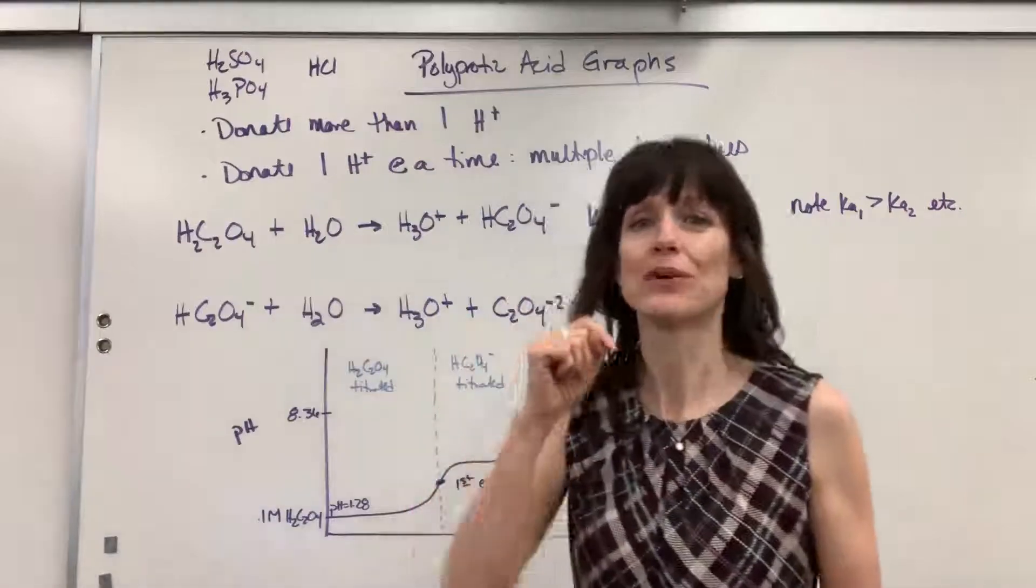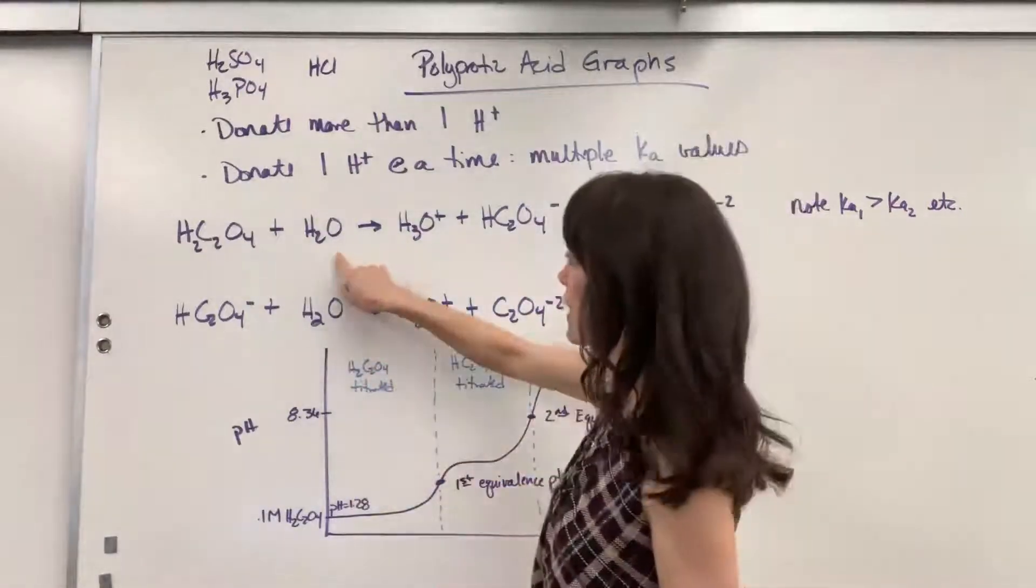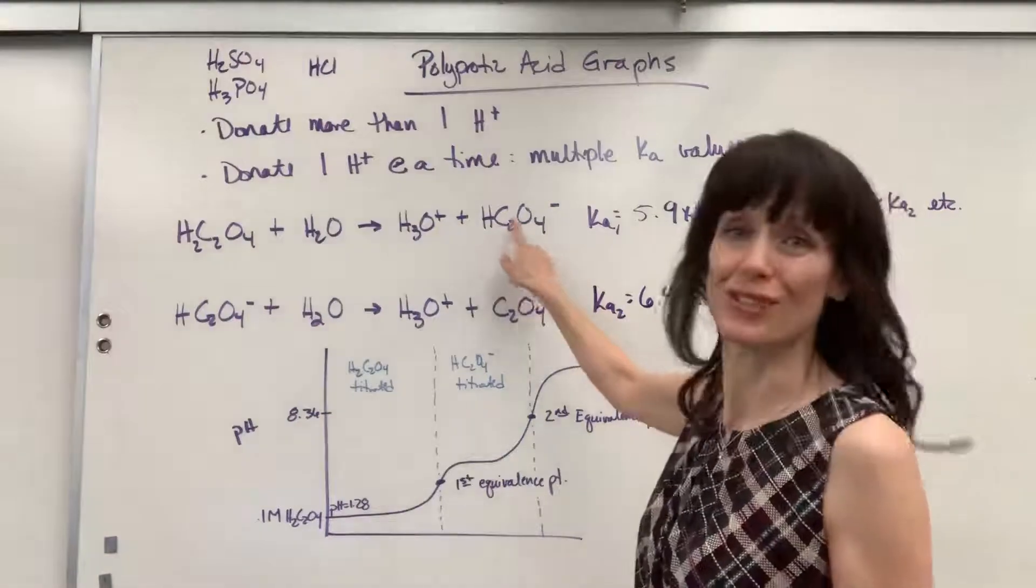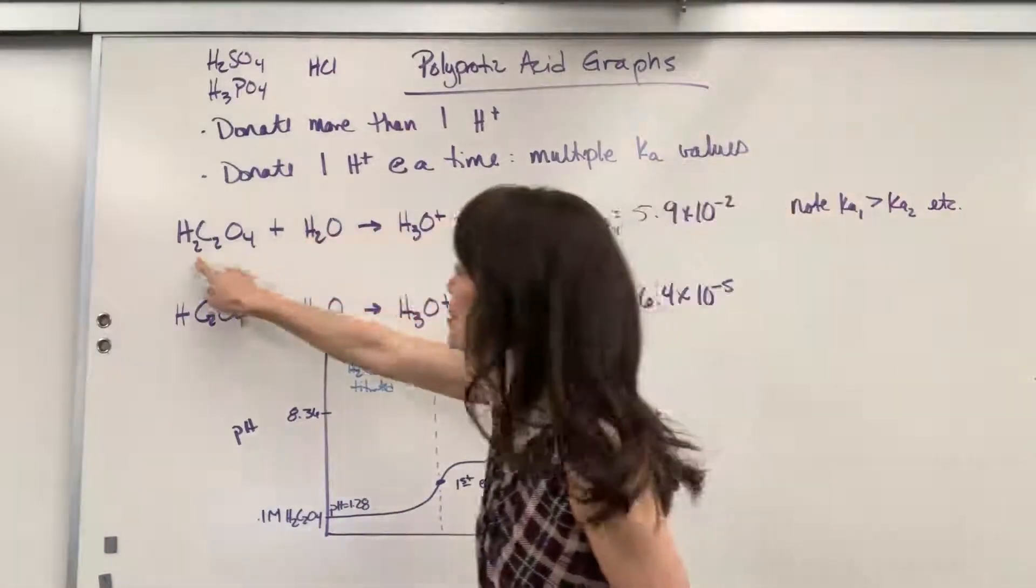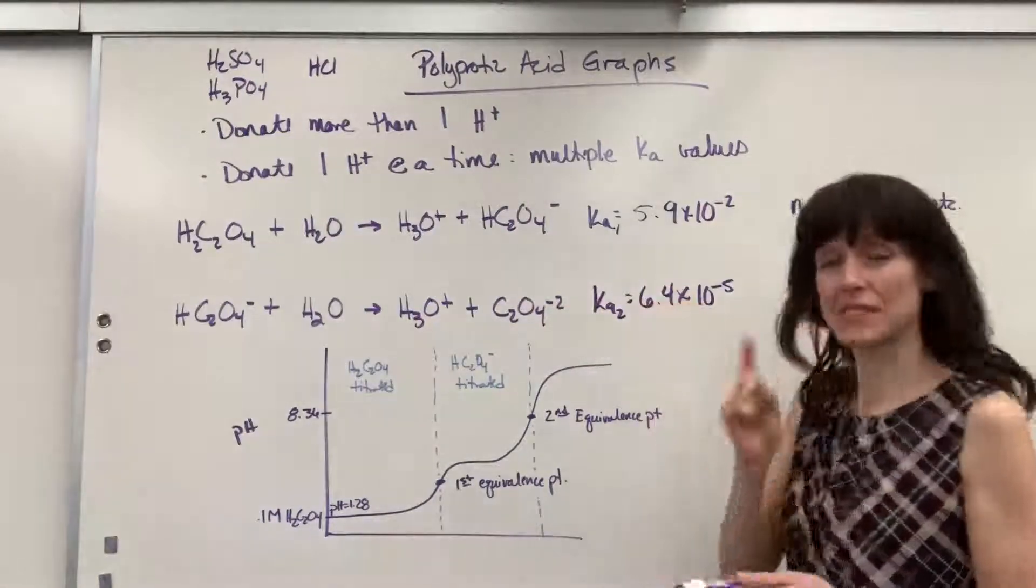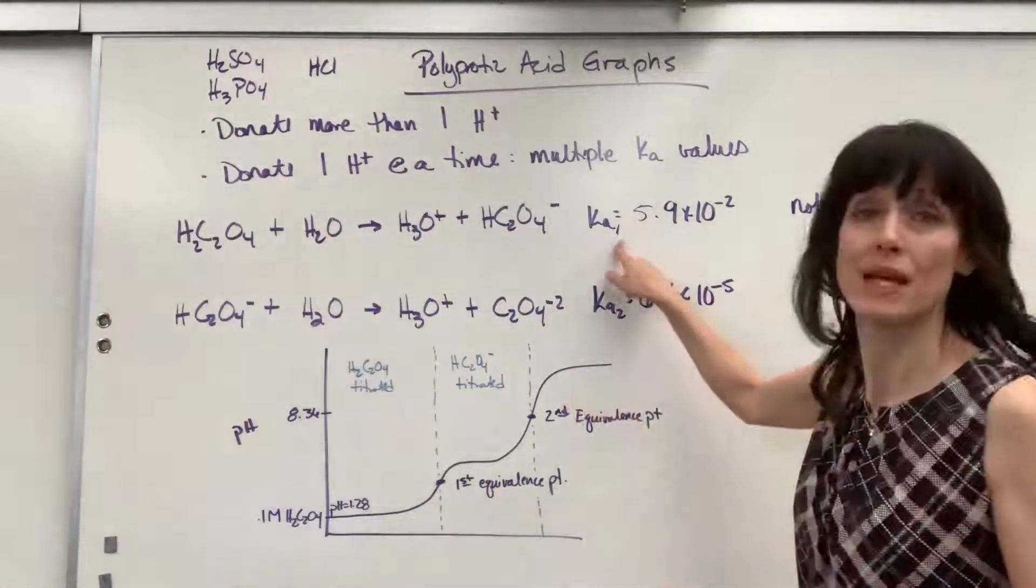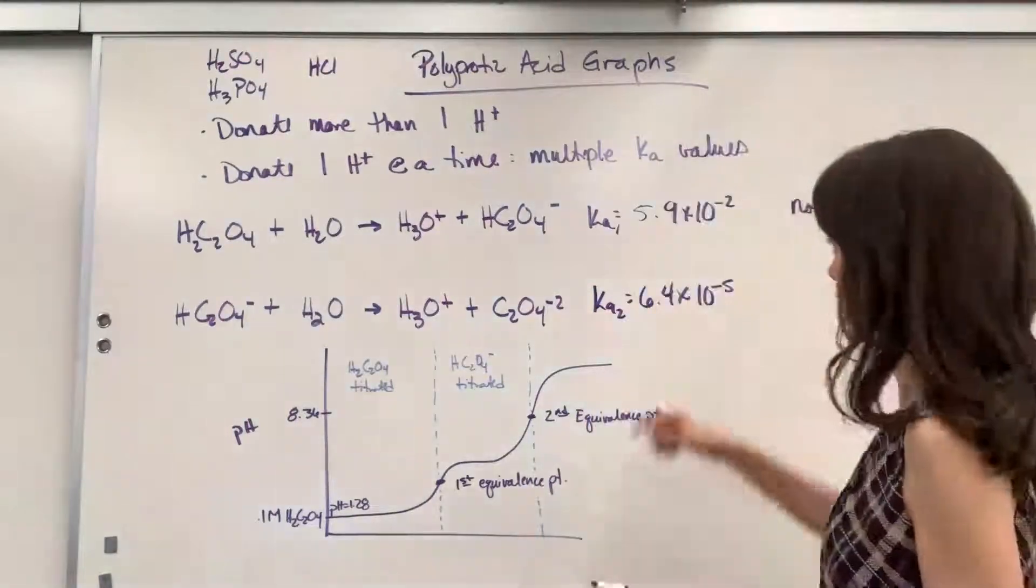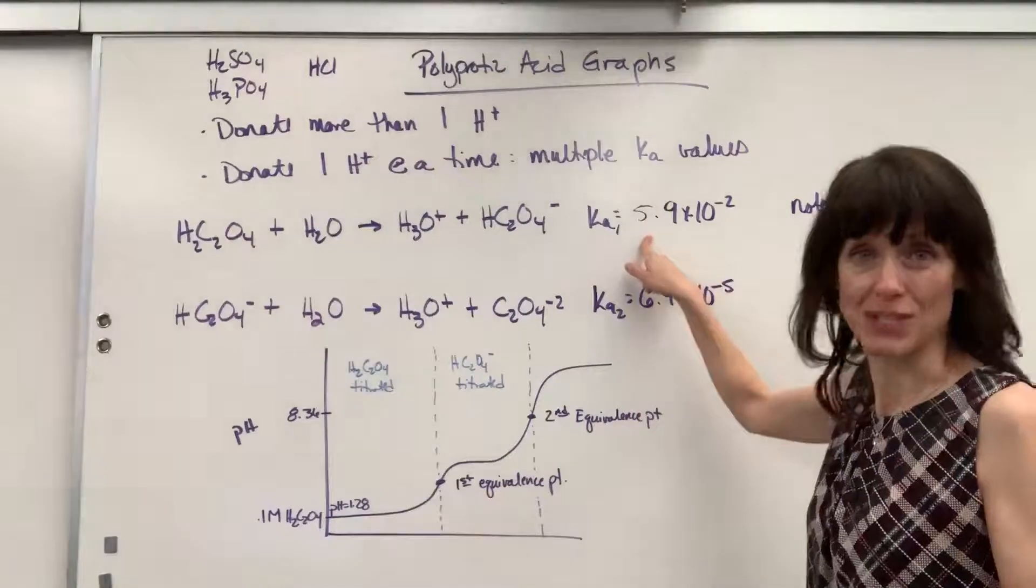And notice that it will donate one hydrogen. So it reacts with water to produce hydronium, and the product is hydrogen oxalate. Notice it donated only one hydrogen. The Ka value for this, notice how we write it. We do Ka sub one, meaning this is the first deprotonation. It's the first hydrogen that's lost, and it is 5.9 times 10 to the minus 2.